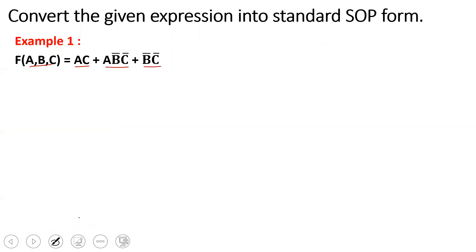In the first term AC, the B variable is missing. In the second minterm, AB̄C̄ has all three variables, so that is not a problem. In the third minterm, B̄C̄, the A variable is missing. So step 1: over each minterm, we will find any variable or literal that is missing. Step 1: identify. Step 2: we will find the formula for AC.